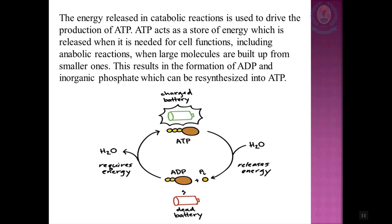ATP can be synthesized from ADP and a phosphate group with the help of the same ATPase enzyme, requiring an input of energy of 34 kilojoules per mole of ATP produced. You can think of ATP and ADP as the charged and uncharged forms of a rechargeable battery. ATP is the charged form with a very high amount of energy that can power cellular reactions. Once the energy has been used, the uncharged form — ADP — must be recharged before it can be used as a power source again.